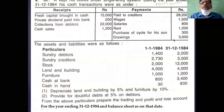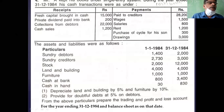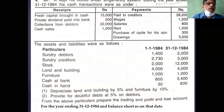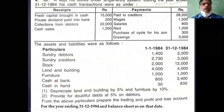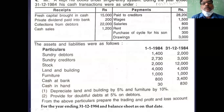Today we see exercise number four. Mr. A keeps his books under single entry system. During the year ended 31st December 1984, his cash transactions were as follows. He has given the cash transactions made during the year — receipts on the receipt side and payments on the payment side.